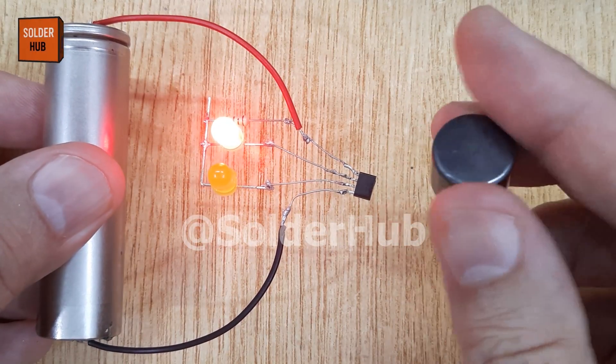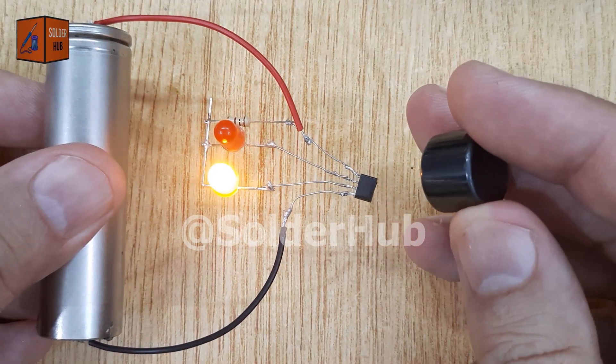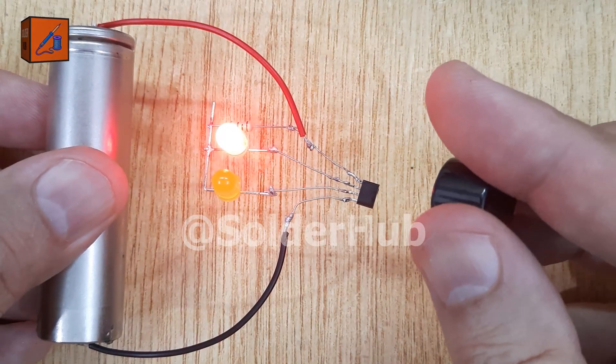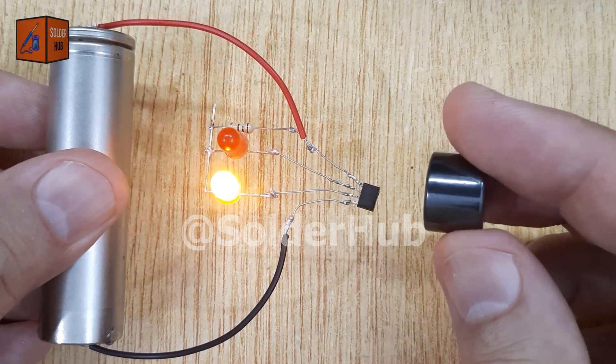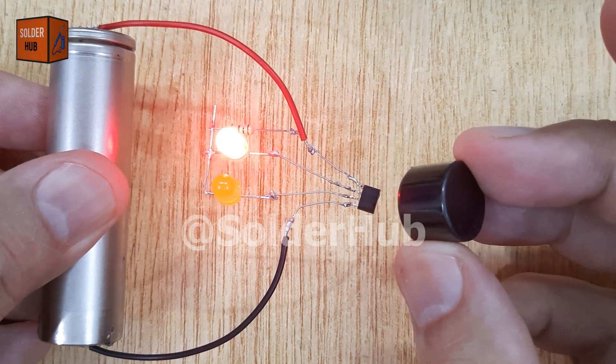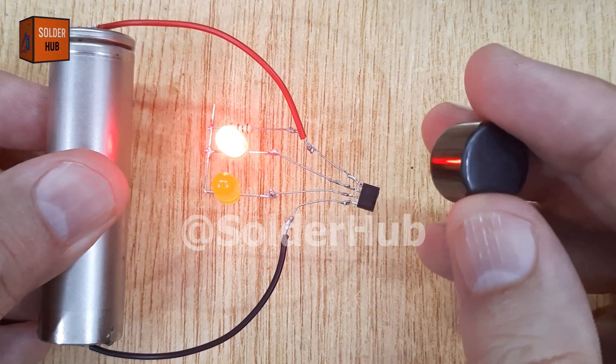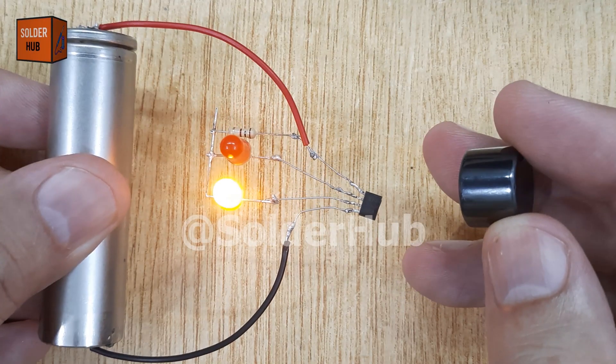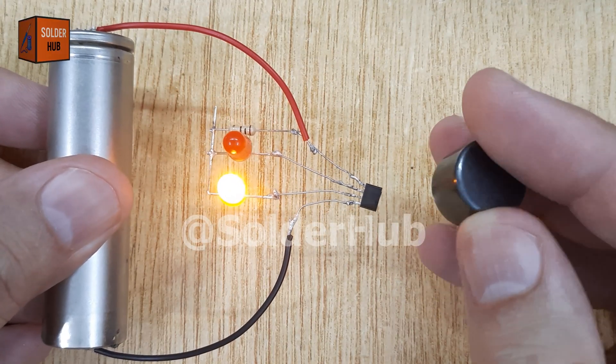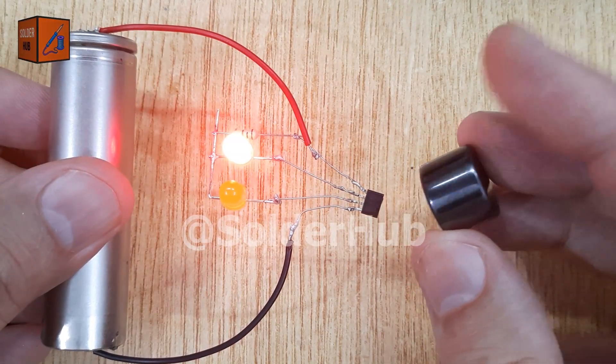You can use this project as a contactless switch for gadgets, turning lights on and off with just a magnet; in security systems, detecting if a door or window with a magnet is opened or closed; in DIY bikes and toys to trigger LEDs or buzzers when magnets pass nearby; in speedometers, where a magnet on a wheel activates the sensor every rotation; or as an educational project showing how magnetic fields interact with electronics.